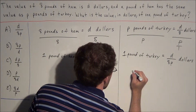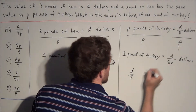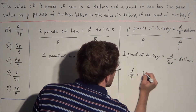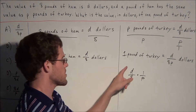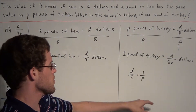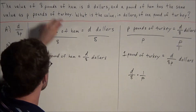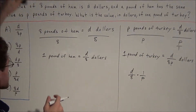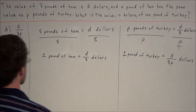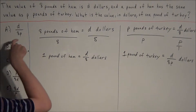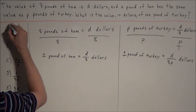Just to recap: d over 8, keep, change, flip gives us d over 8 times 1 over p, which gives us d over 8p dollars. So this tells us the answer to this question is choice A: d over 8p.